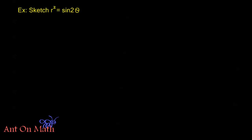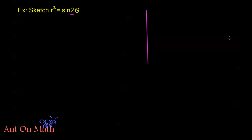Sketch r squared equals sine 2 theta. When I set up my reference graph for this problem I'm going to label it a little bit differently. We see we have a sine curve. This 2 makes my period pi instead of 2 pi but we don't have any other shifts or changes in amplitude. I still want to graph all the way to 2 pi so we can use this for reference for my polar graph, where this horizontal axis is my theta but this vertical axis I'm going to call r squared instead of r.